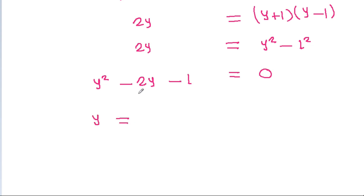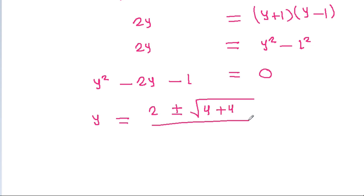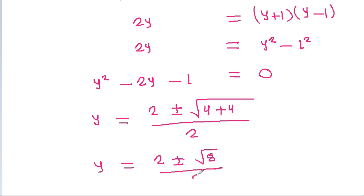Using the quadratic formula, y = (-b ± √(b² - 4ac)) / 2a = (2 ± √(4 + 4)) / 2 = (2 ± √8) / 2, so y = 1 ± √2.